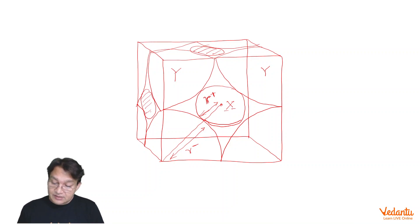Square planar void means the ball is there in the greatest circle of the plane formed by four spheres. In a square planar void, the radius ratio is given by R+ upon R- equals root 2 minus 1, which is equals to 0.414.